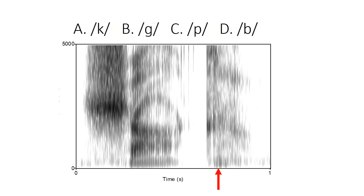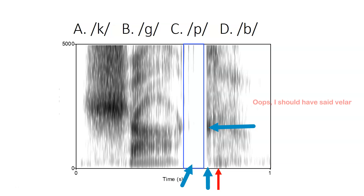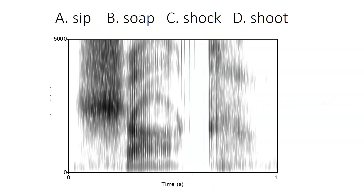In this spectrogram of a monosyllabic word seen before, there is a stop near the end indicated by a period of near silence, a transient, and then some additional aspiration noise for this clearly articulated stop. There is no evidence of a voice bar, ruling out voiced stops, and there is a mid-frequency concentration of noise in the released burst, pointing toward the voiceless velar stop, K. Combining this with the initial SH fricative identified earlier, we can identify this word — it starts with SH and ends with K, so among the choices it must be the word 'shock.'